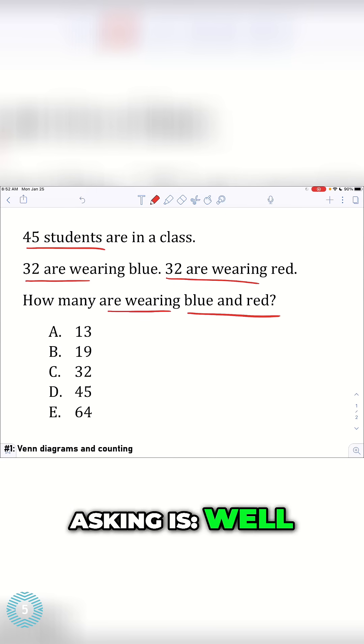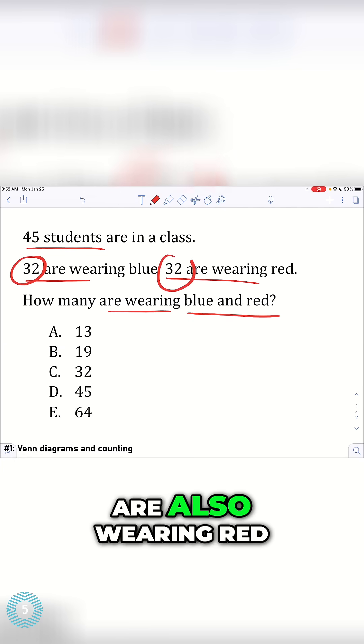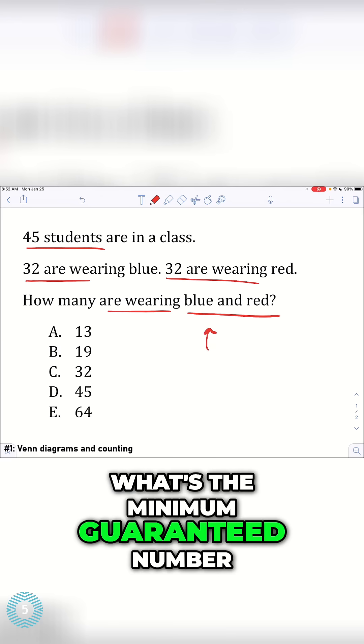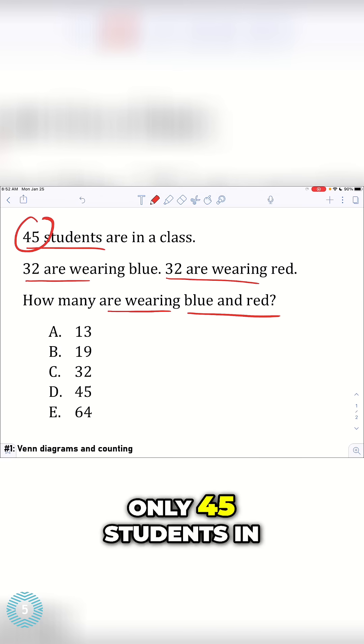So what this is asking is, well, there's different combinations of students that are wearing blue and red. It could be that those same 32 students that are wearing blue are also wearing red, but what this is really asking is, what's the minimum guaranteed number given that there are only 45 students in the class?